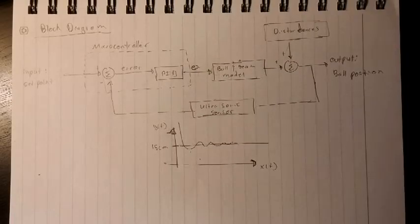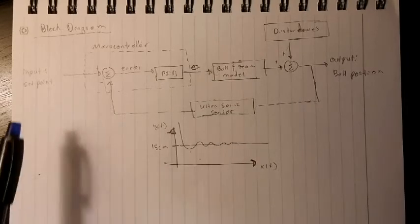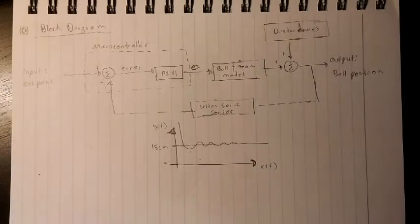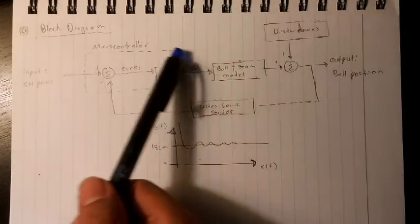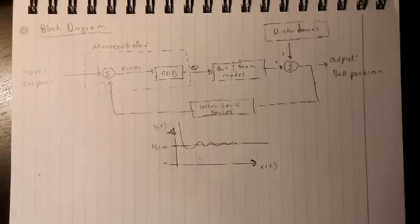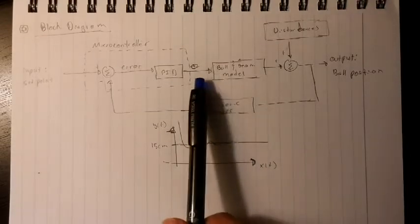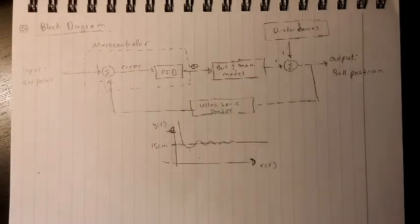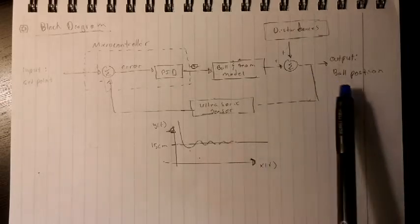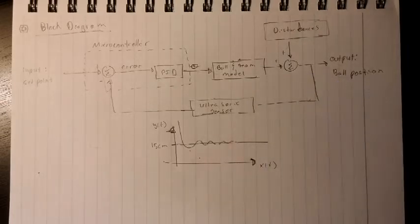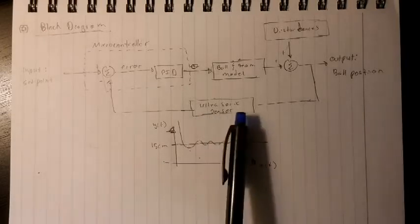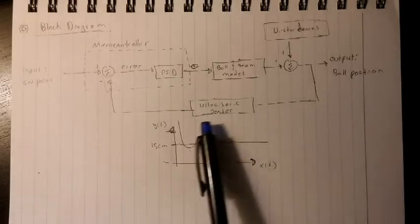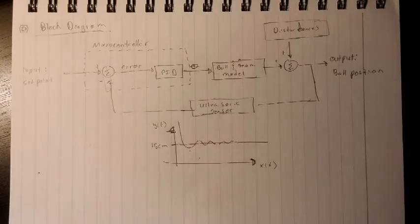This is a block diagram representation of our control system. Our set point, which is our input, is provided into the microcontroller via the potentiometer, which can be seen here in the dashed line. The microcontroller then outputs an angle, which is fed into the ball and beam model that translates into a ball position. This ball position is read via the ultrasonic sensor, which then feeds that back into the microcontroller.